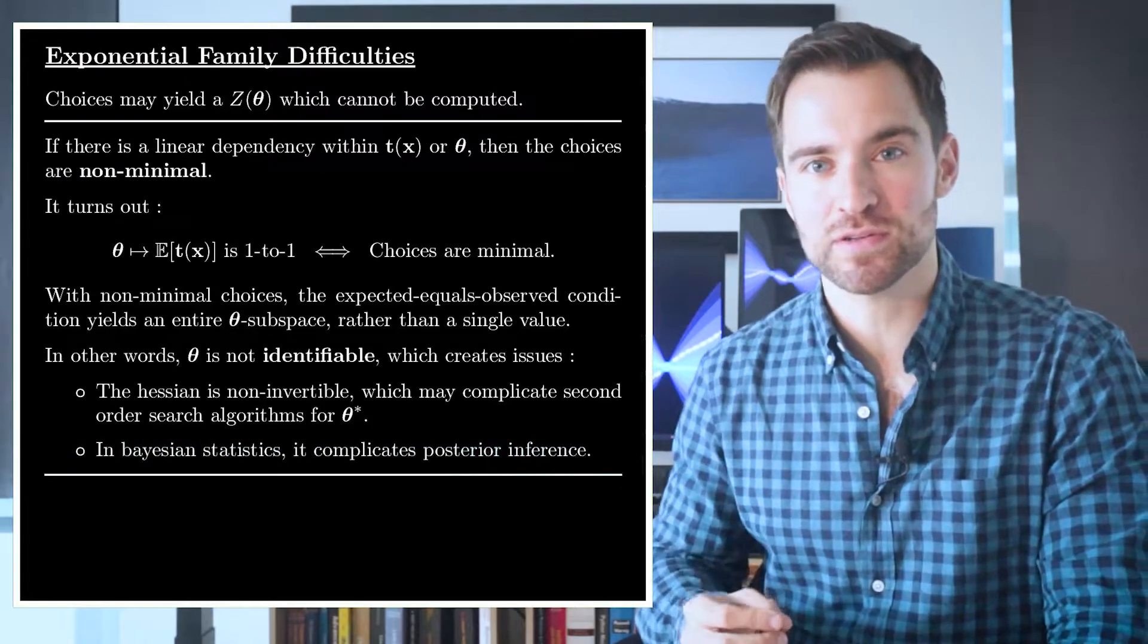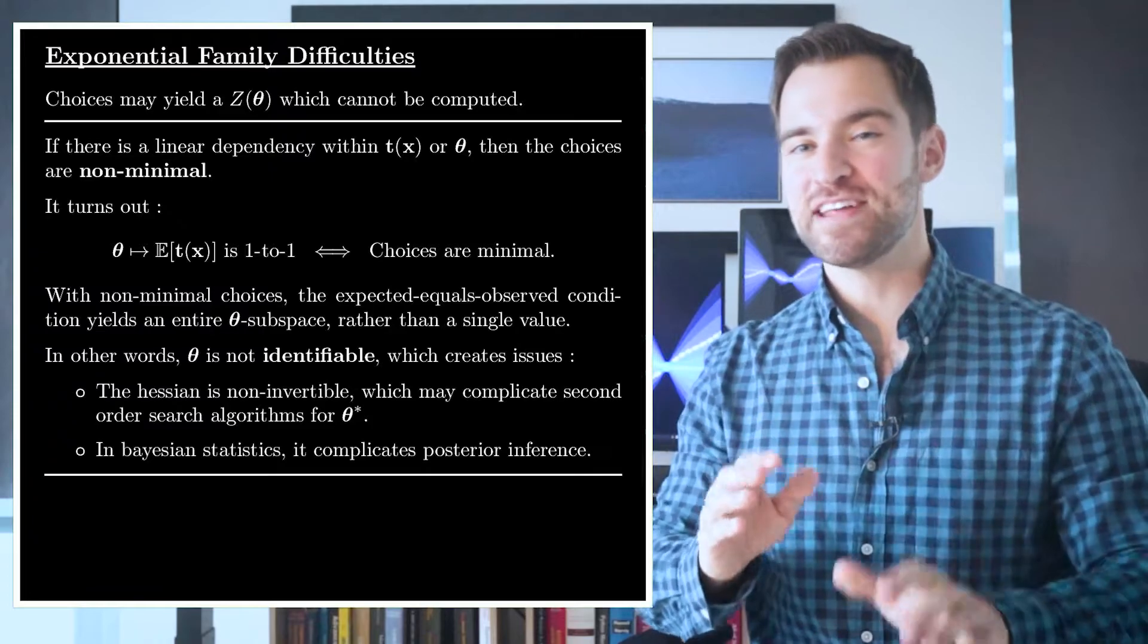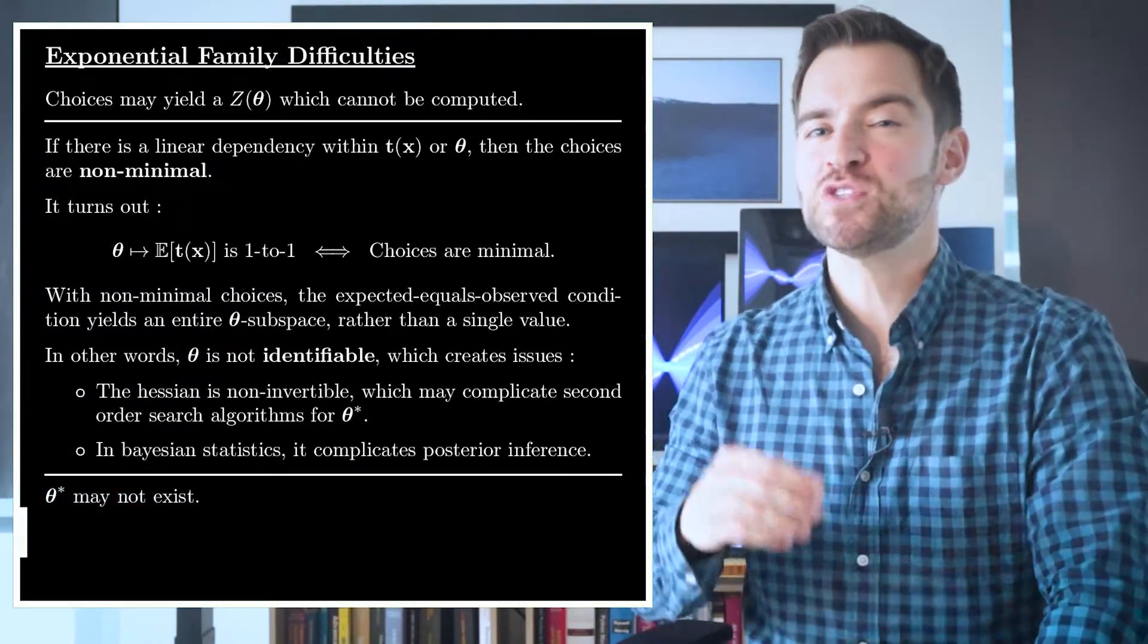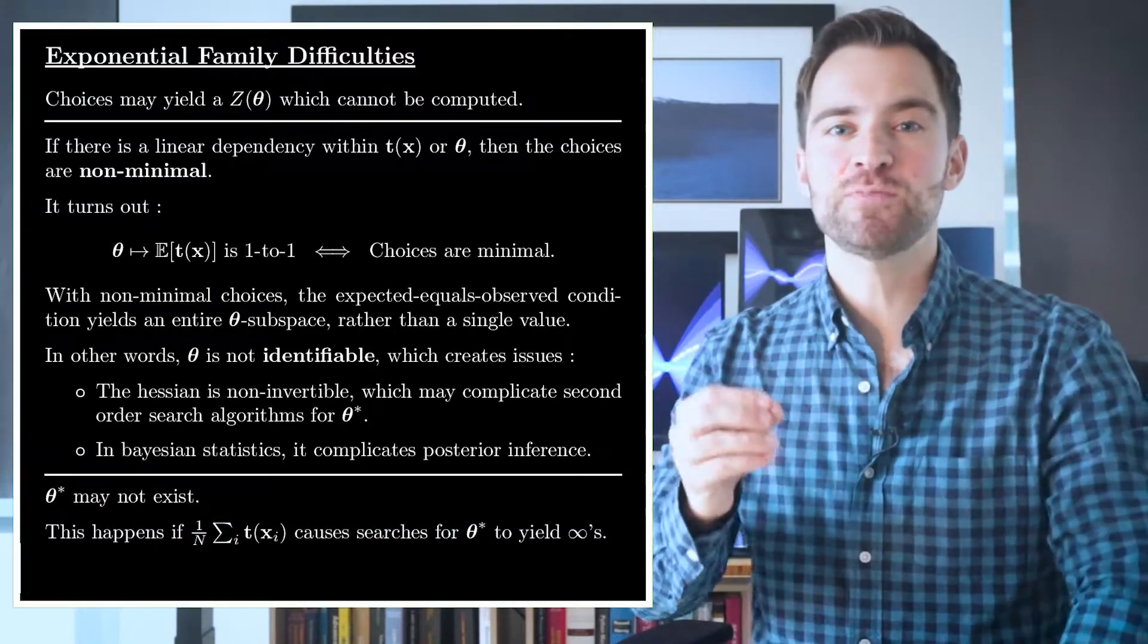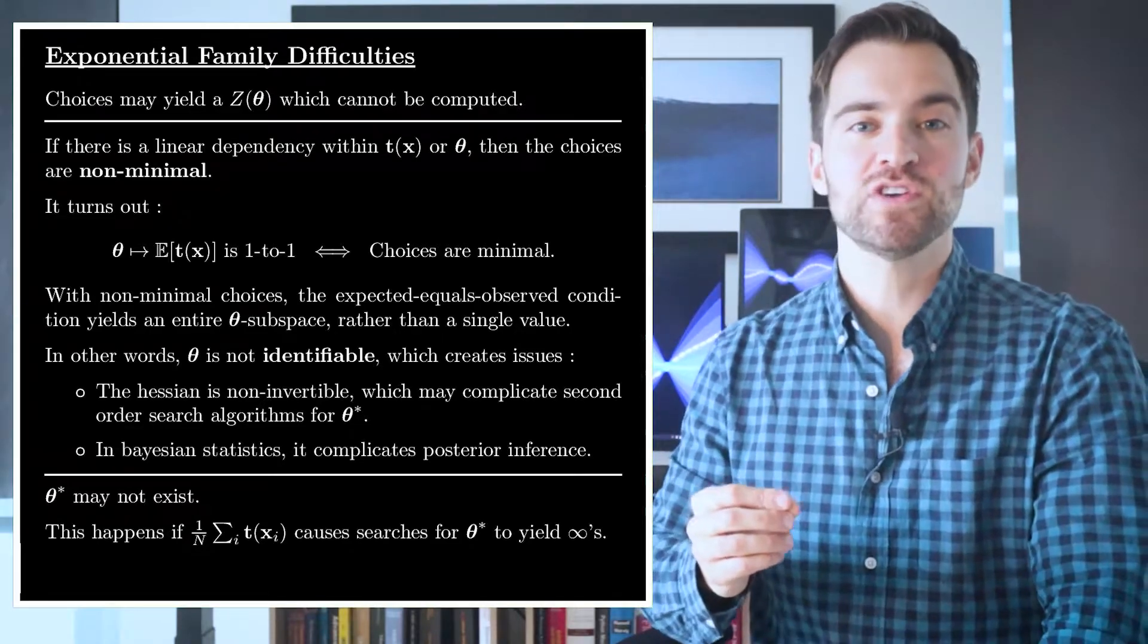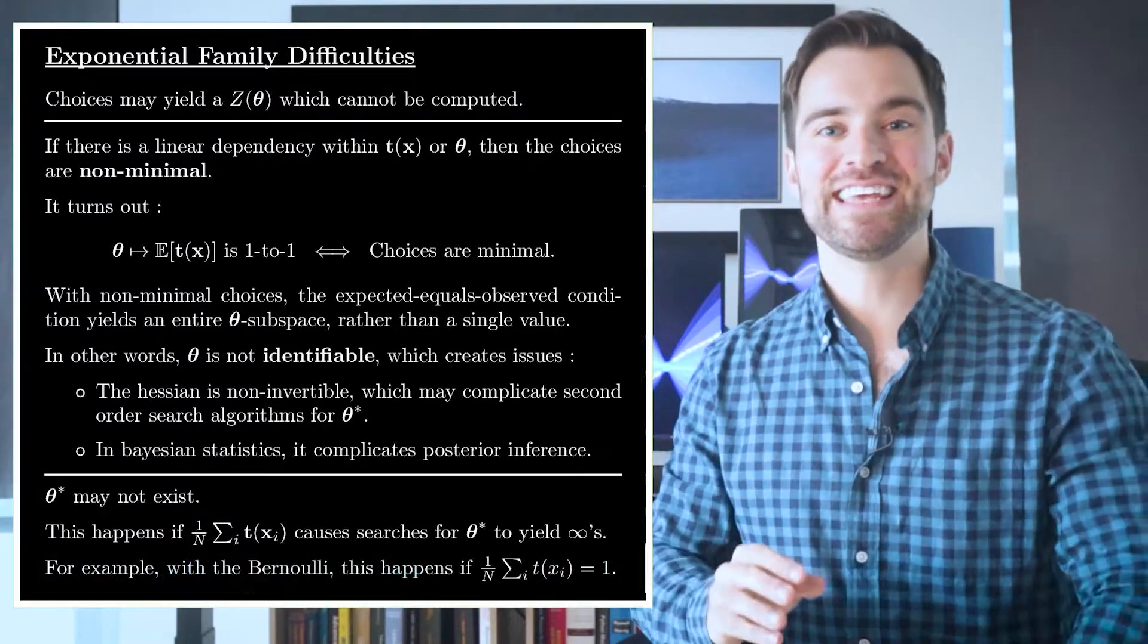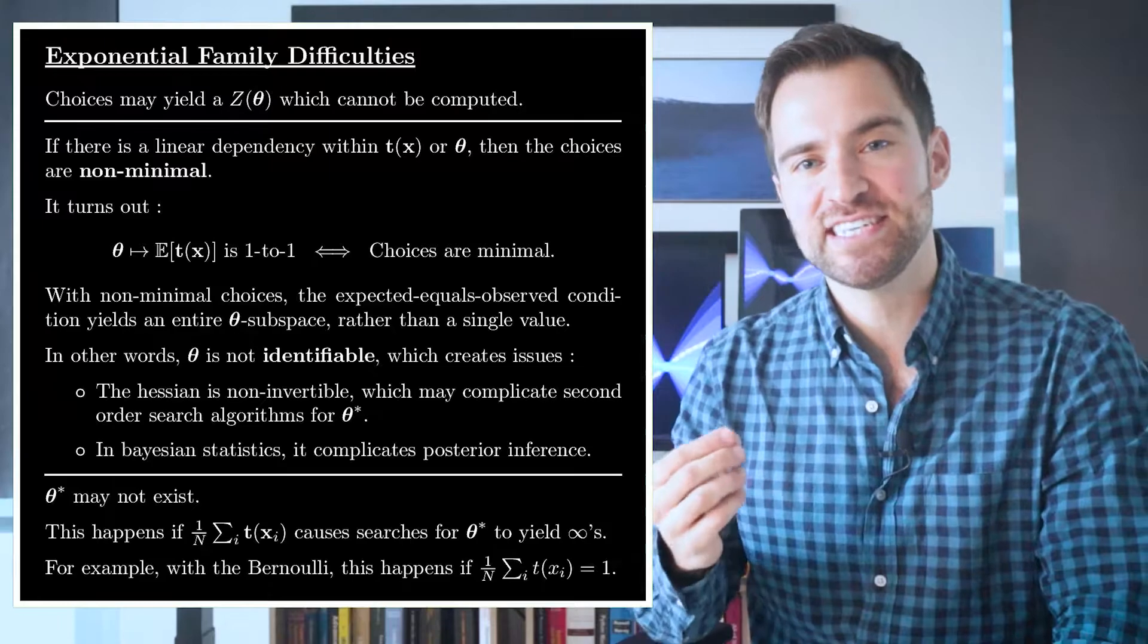Also, it complicates things in the Bayesian world. Specifically, it makes inferring the parameter posterior tricky. And third, the MLE may not even exist. From what I've seen, this happens when your average observed sufficient statistics are on the edge of the space they exist within. In that case, optimizing for θ will result in values flying off to plus or minus infinity. For example, in the case of the Bernoulli, it's easy to see this will happen if your average observed statistic is 1.